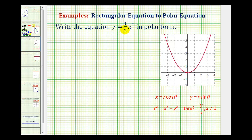We want to write the rectangular equation y equals one-half x squared in polar form. Notice the equation in rectangular form contains x and y, and an equation in polar form is going to contain r and theta. To do these conversions, we'll use these equations here that relate polar and rectangular coordinates.